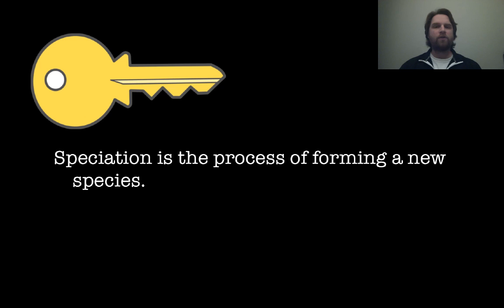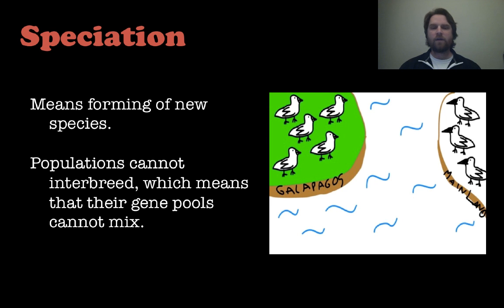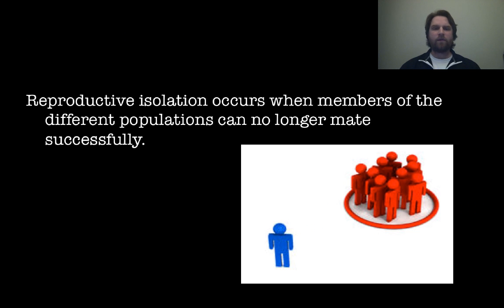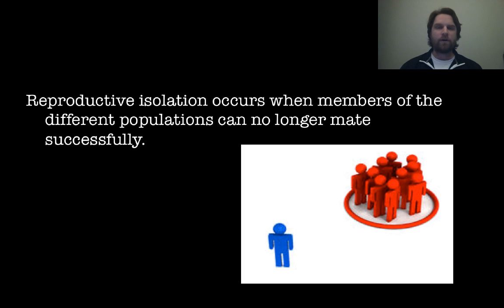Now we move on to a second key concept: speciation, which is the process of forming a new species. Speciation usually occurs when populations are isolated from one another and cannot interbreed, meaning their gene pools cannot mix, and over time this forms a new species. Certain factors can create what we call reproductive isolation — when members of different populations can no longer mate successfully. We'll discuss three different types of reproductive isolation that can cause the formation of new species.